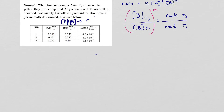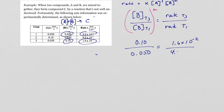The concentration of B from trial 3 is 0.10, divided by 0.050 from trial 1. That is set equal to the rate of trial 3, which is 1.6 times 10 to the negative 2, divided by 4.0 times 10 to the negative 3. When we reduce this down, the left side equals 2 and the right side equals 4. So we ask: what power do we bring 2 to in order to get 4? That is an exponent of 2. So the exponent on B in our rate law is 2.